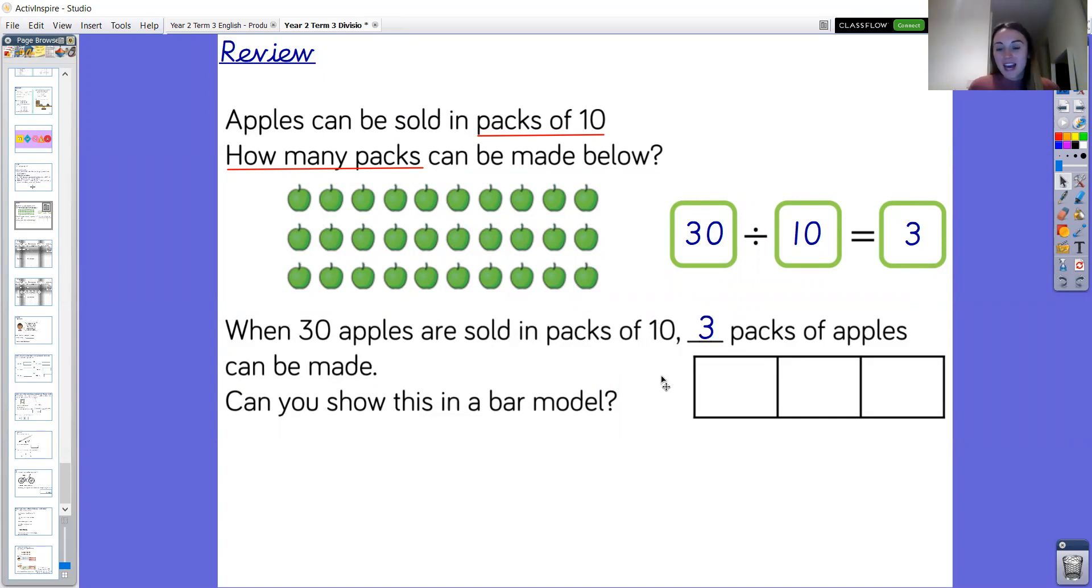Okay so can you show this in a bar model? Hopefully you've had a go at this already this morning. So as you can see in the bar model there are three equal parts which represents the three packs of apples. So I'm wondering what the amount is inside each equal part if each part represents a packet of apples. Well done there are 10 apples inside each pack. So we have three equal groups of 10 just like we can see on the array with three rows of 10. Brilliant well done year two.